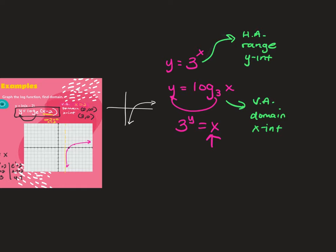A student asks why log couldn't be written as x equals log base 3 of y. In the context of a function, y is f(x), so y is always by itself and x is always with the log. Log is actually the inverse of an exponential — it's a different way to write an exponential function, basically switching the x and y variables.